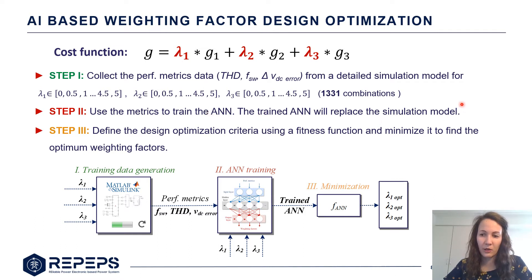After that we will use this data to obtain a neural network so we will not need our simulation model anymore. Our ANN will execute much faster and it will give us for even more combinations what the performance metrics data of our model are. After that we can define optimization criteria in the shape of a fitness function and find our optimum weighting factors.